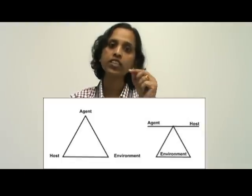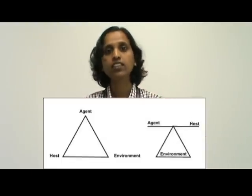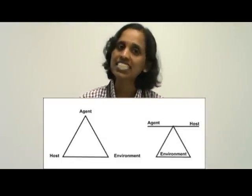So what we have looked at today is that the epidemiologic triangle consists of three elements: agent, host, and environment. Occurrence of a disease does not solely depend on the presence of the agent in the environment. The interaction between the agent and the host in a conducive environment is necessary for causing a disease. Thank you very much.